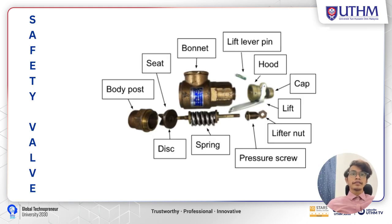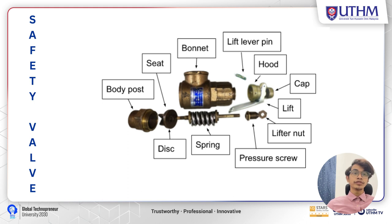For the valve components, as we can see on the slide, there is a spread-root view of the safety valve. It contains a body post, seats, bonnet, lift label pin, hood, cap, lifter, lifter nut, pressure screw, spring, and disc. For the gate valve, there is also an exploded view showing: a body, a seat ring inside the body, the wedge-shaped gate, bonnet, gland packing, the gland follower, the stem, the O-ring, and the handwheel.